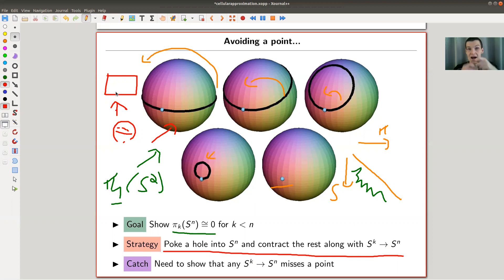If you believe the strategy of poking a hole into the South Pole, flattening the space itself, and everything is flat, everything is a square, and in the square it's trivial, then this calculation of π_1 of S^2 is not so hard. Contract the rest along with the map—that's kind of the strategy.